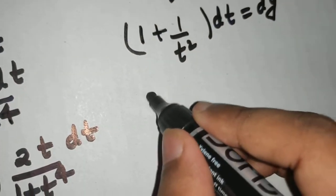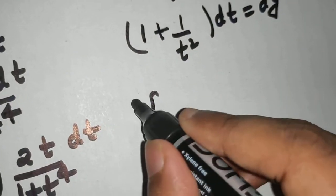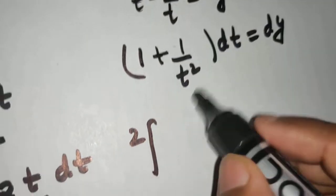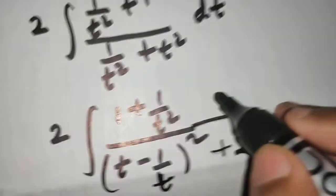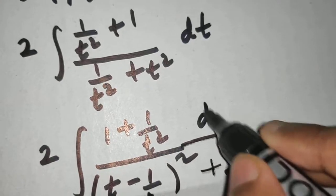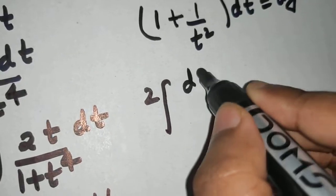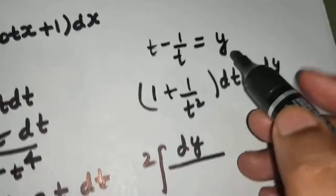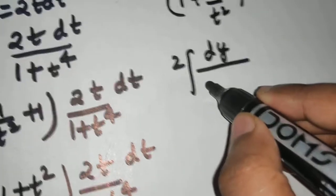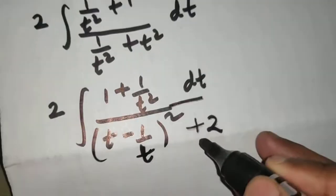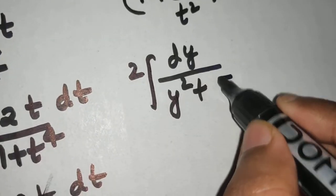So my integral becomes: 2 is already outside, (1 + 1/t²) dt can be replaced simply by dy. In the denominator, (t − 1/t) is y, so I get y² + 2, which I can write as y² + (√2)².